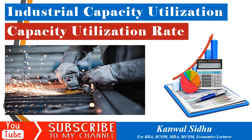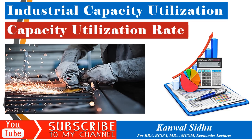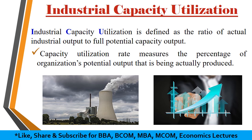In today's lecture, we are going to discuss the concept of industrial capacity utilization. We can calculate the industrial capacity utilization simply as the ratio of the actual industrial output to the full potential capacity output. The capacity utilization rate measures the percentage of an organization's potential output that is actually being produced. It is a key indicator for the business or for a country's economy, and it examines how well a business utilizes its productive capacity.